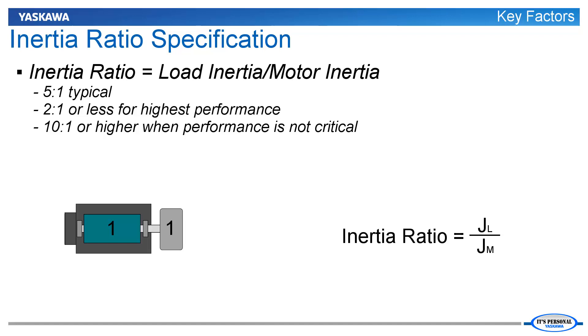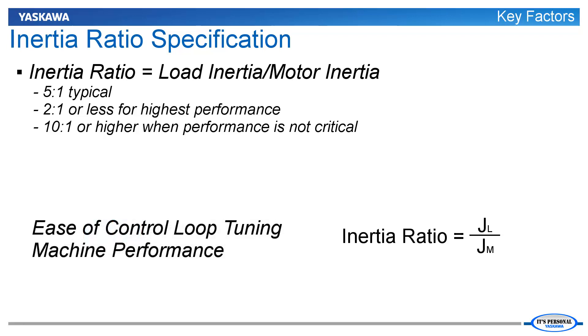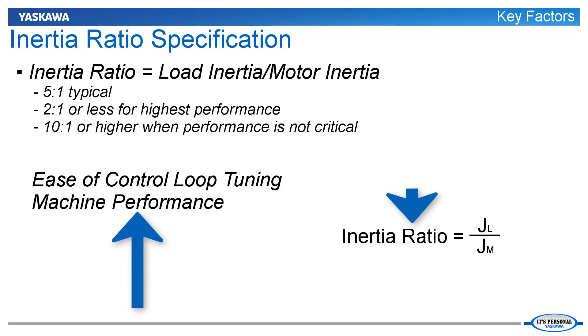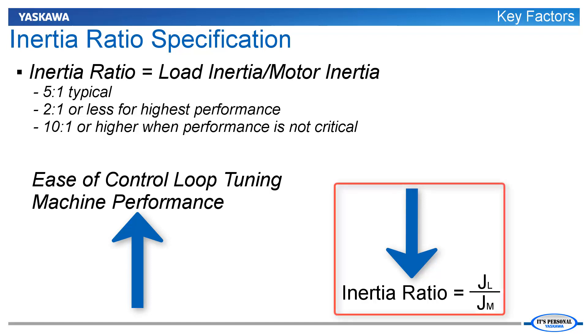However, when high performance isn't as critical, ratios of 10 to 1, 100 to 1, or even higher are not uncommon. In general, ease of control loop tuning and machine performance go up as the inertia ratio goes down. So, if all other factors are equal, a lower inertia ratio is better.